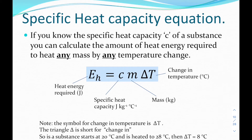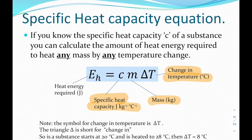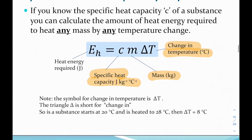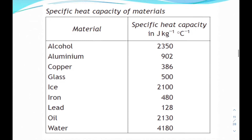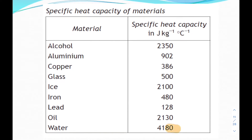We have a specific heat capacity equation: if you know the value for the specific heat capacity of a substance, all you have to do is multiply that by the mass and the change in temperature of the substance, and you get the heat energy that is required. If you're ever asked a question about specific heat capacity in an exam, you have your data sheet that has various materials and the values for each of those materials on there.